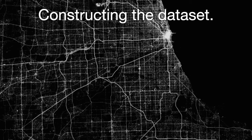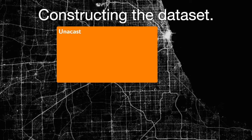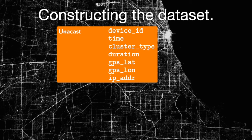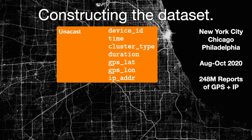Let's talk about the data, which were generously provided by Unicast. Each line of data consists of a device ID, a unique identifier, a timestamp, a cluster type that categorizes a cluster, a duration of a location, and a GPS-based latitude and longitude, all along with the IP address. We had data for three cities in the United States — New York, Chicago, and Philadelphia — for three months of 2020. Ultimately, we had 248 million simultaneous reports of GPS location and IP address.